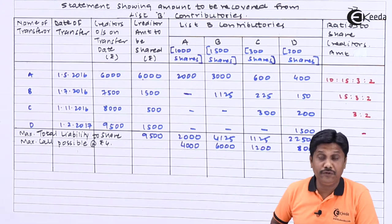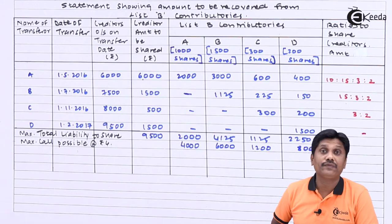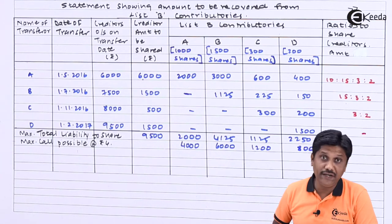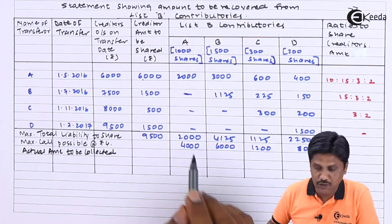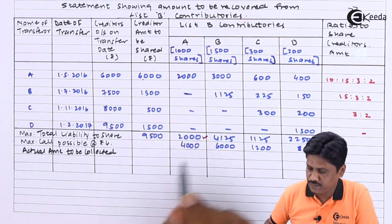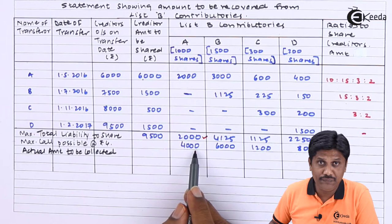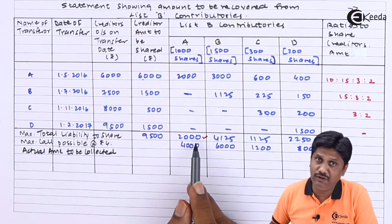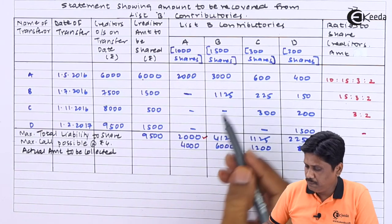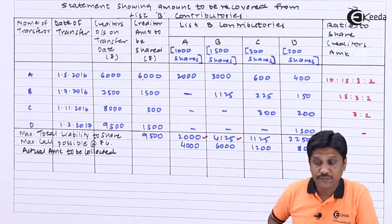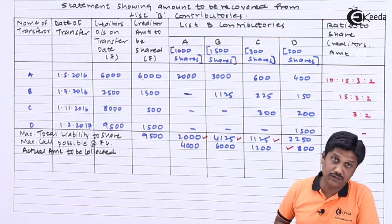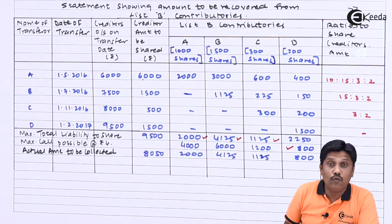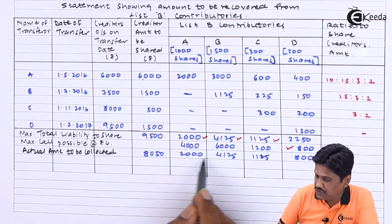As per the rule, List B contributors are supposed to pay the amount of liability outstanding or their unpaid call, whichever is less. So we decide the actual amount to be collected on a whichever-is-lower basis. A will pay Rs. 2,000 — his liability is Rs. 2,000 but maximum capacity is Rs. 4,000, so he pays Rs. 2,000. B will pay Rs. 4,125 — whichever is lower. C will pay Rs. 1,125 — whichever is lower. D will pay Rs. 800 — whichever is lower.